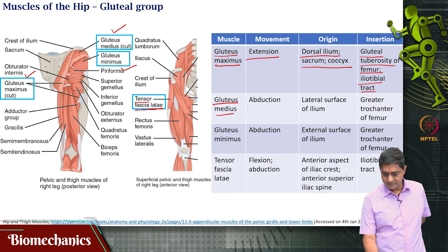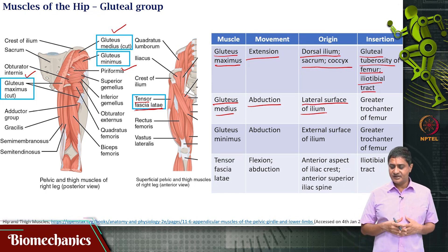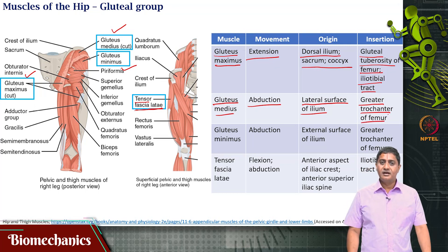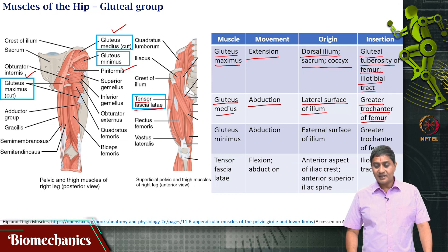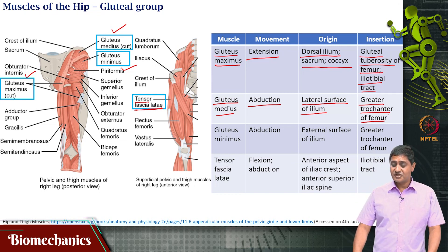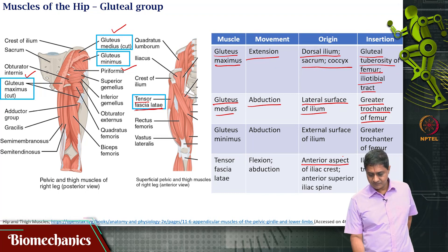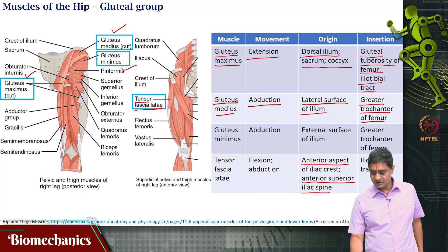Gluteus medius has the function of abduction; its origin is on the lateral surface of the ilium, and its insertion is on the greater trochanter of the femur. Gluteus minimus is the deeper, relatively smaller muscle; its function is also abduction, originating on the external surface of the ilium, with insertion on the greater trochanter of the femur. Tensor fasciae latae has the function of flexion and abduction; it is found on the anterior aspect of the iliac crest and anterior superior iliac spine, and its insertion is on the iliotibial tract.